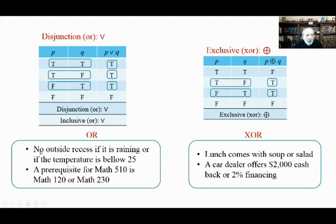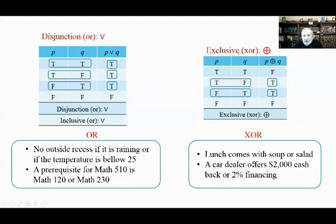'No outside recess if it is raining or if the temperature is below 25' — this OR is inclusive, because if both happen we still don't go outside. 'A prerequisite for math 510 is math 120 or math 230' — again inclusive OR. Examples of exclusive OR: 'Lunch comes with soup or salad' — you don't get both, only one. 'A car dealer offers $2,000 cash back OR 2% financing' — this OR is exclusive.